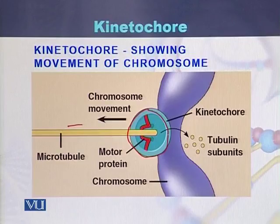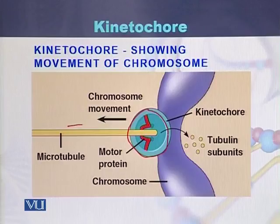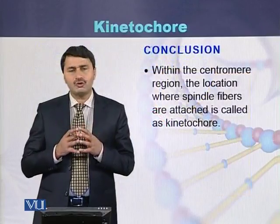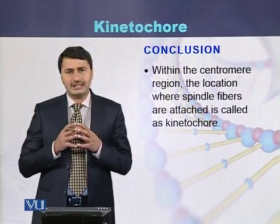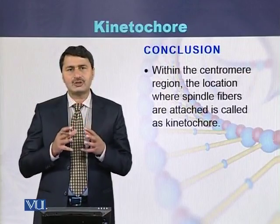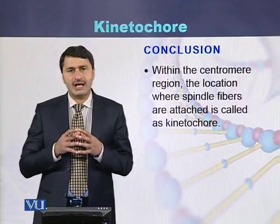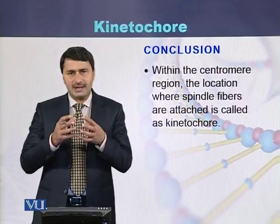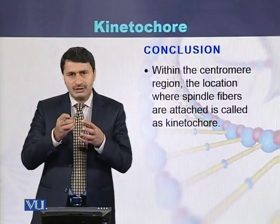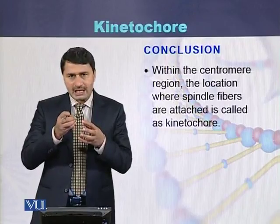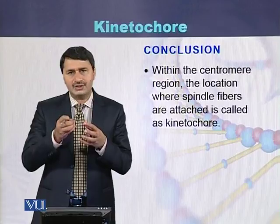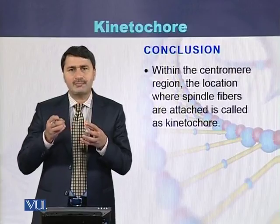Once the microtubule pulls the kinetochore or centromere region, the chromosome starts to move towards the microtubule. In conclusion, kinetochores are the region within the centromere where spindle fibers attach, and spindle fibers pull the centromere region so that the chromosome moves towards the poles.